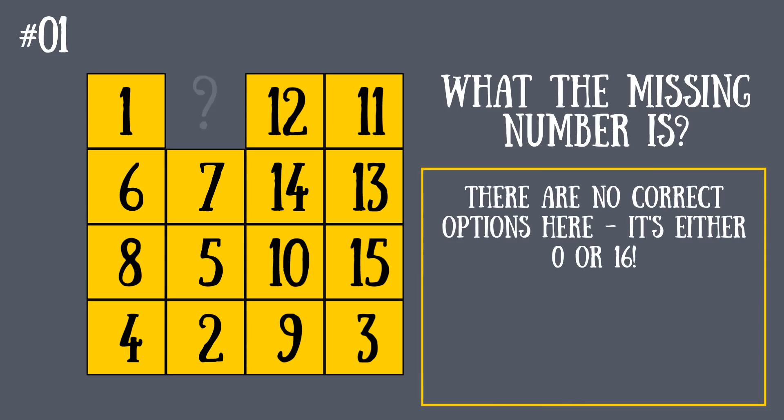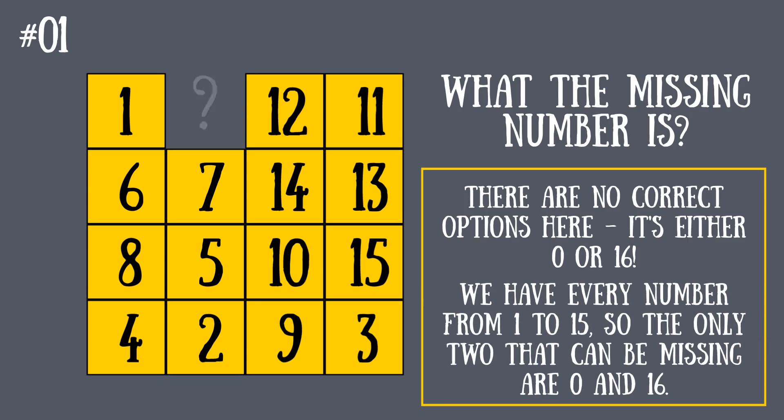There are no correct options here—it's either zero or 16. This riddle has no pattern; the numbers are just jumbled up. We have every number from 1 to 15, so the only two that can be missing are 0 and 16.